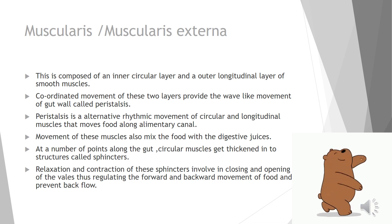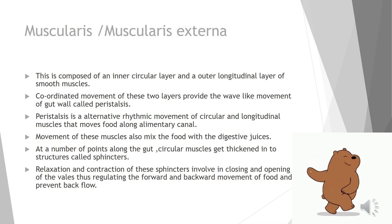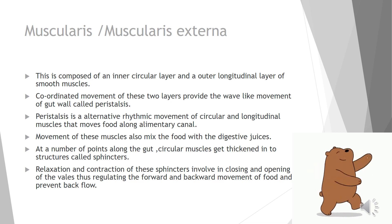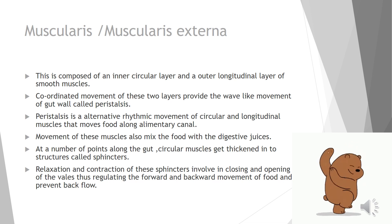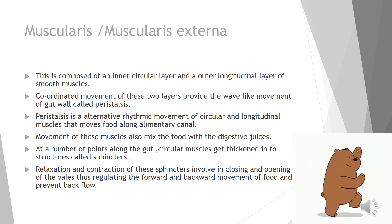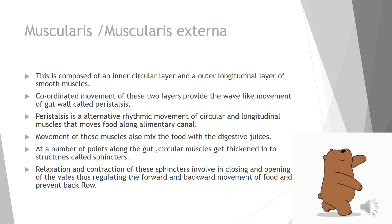The muscularis externa is composed of an inner circular layer and an outer longitudinal layer of smooth muscles. The coordinated movement of these two muscle layers produces a wave-like movement of the gut wall, which we call peristalsis — defined as the alternating and rhythmic movements of the circular and longitudinal muscles that move food along the alimentary canal. These muscular movements also mix the food with digestive juices.